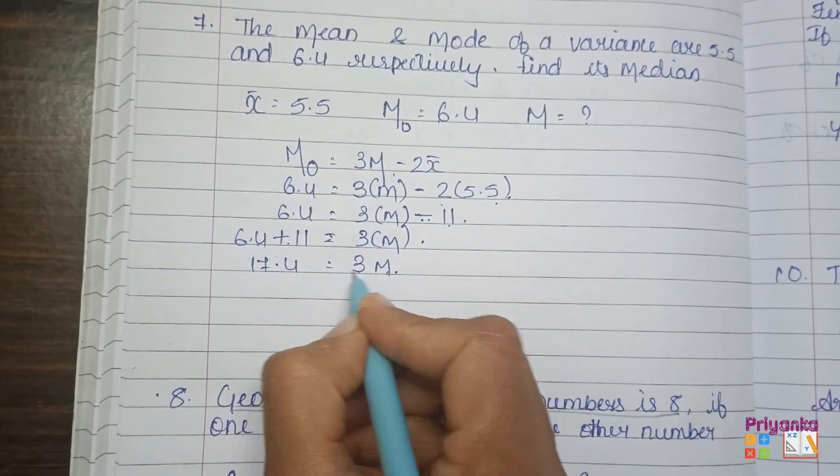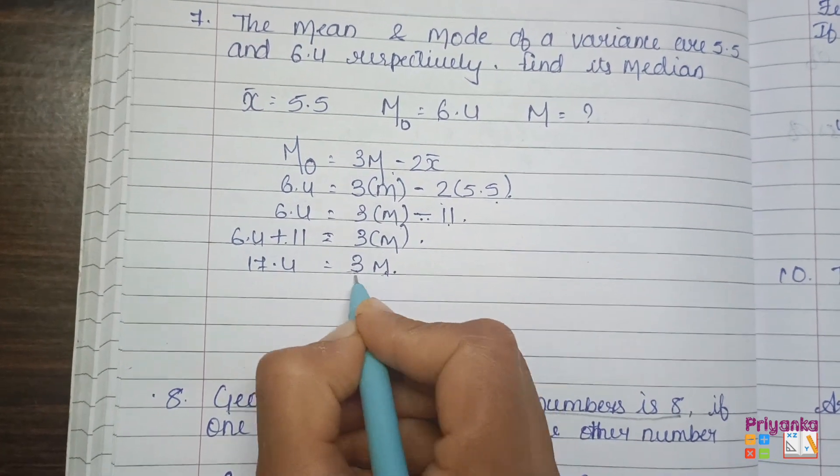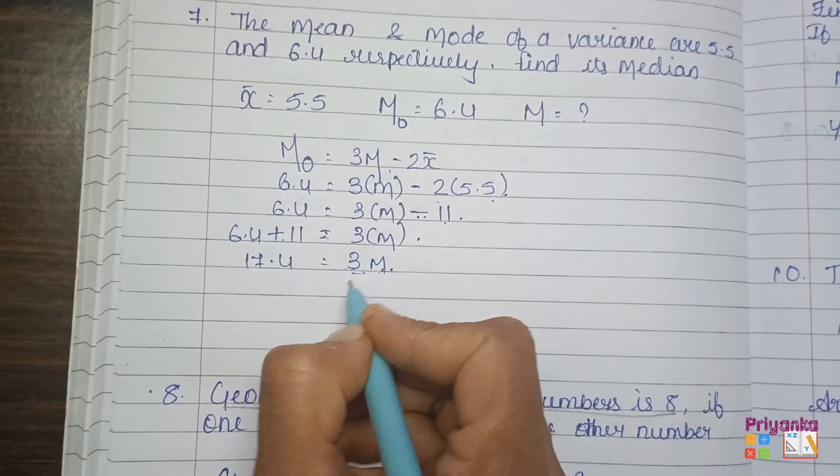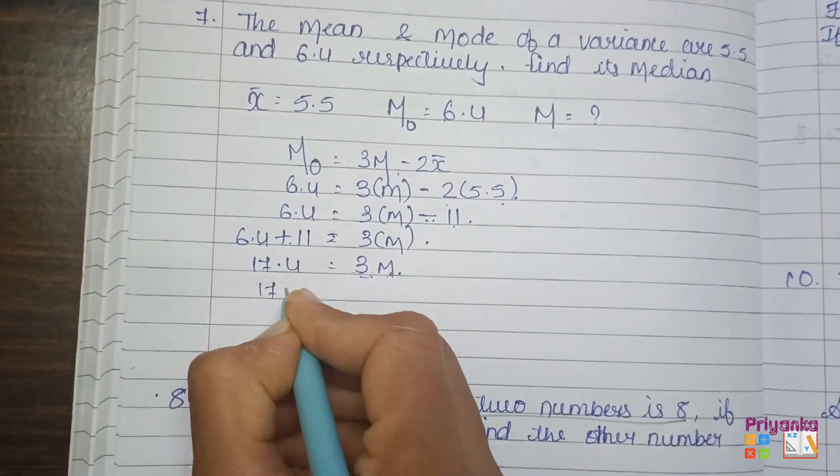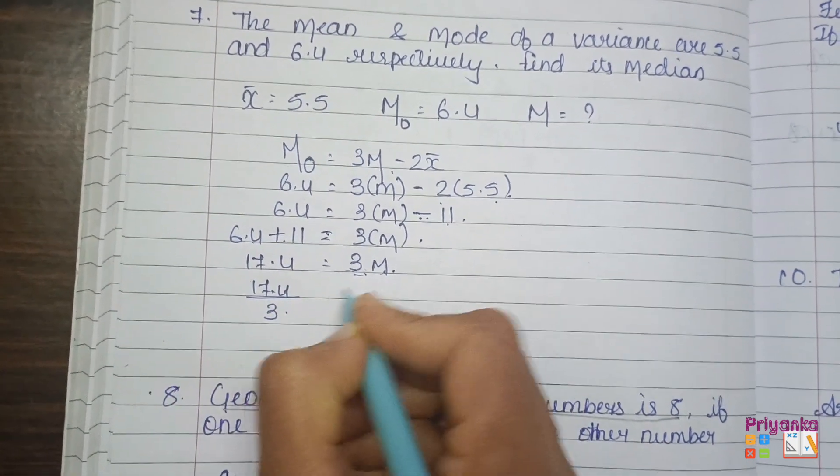Here comes 17.4 is equal to 3 median. Now, the 3 median is together. Get it separate. As it is a multiplication sign, we can take it down to 17.4.